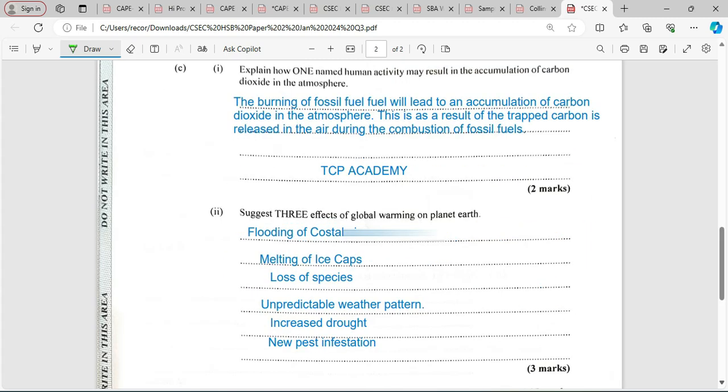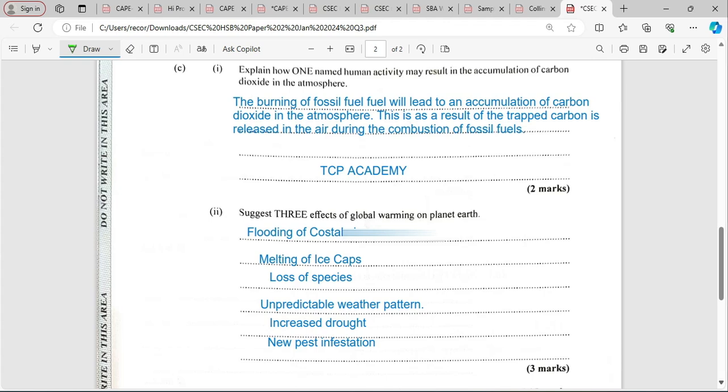Explain how one named human activity may result in an accumulation of carbon dioxide in the atmosphere. We're looking at a carbon cycle here. The burning of fossil fuel will lead to an accumulation of carbon dioxide in the atmosphere. This is as a result of trapped carbon being released in the air during combustion of fossil fuels.